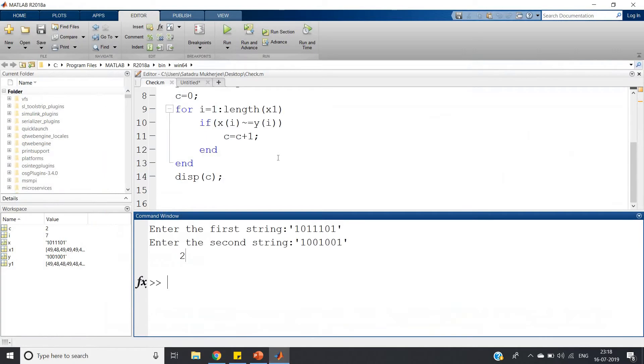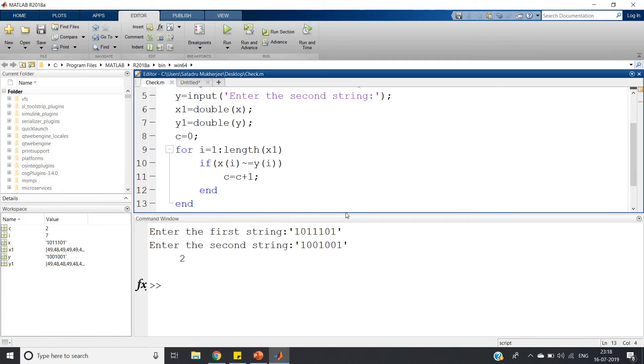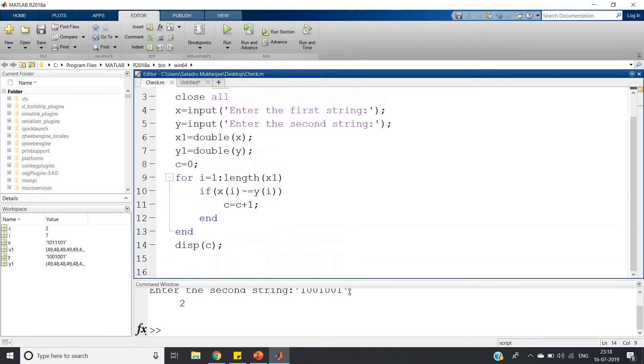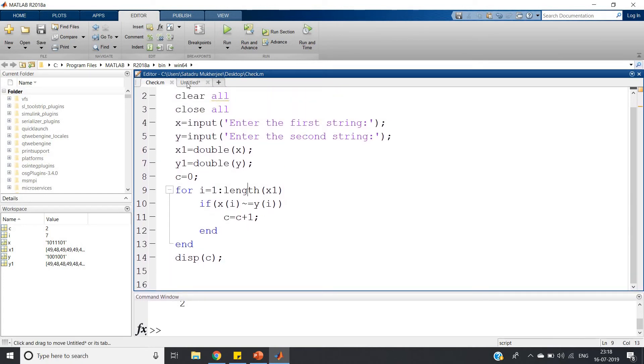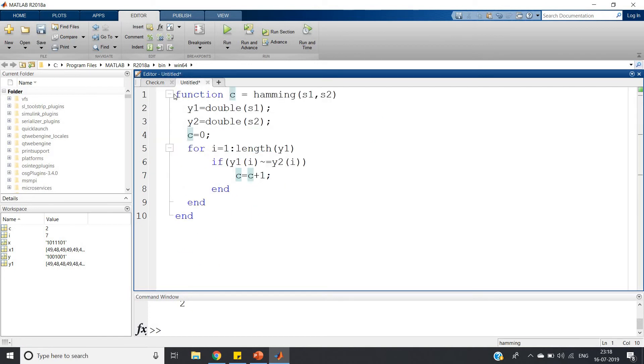Our code is perfectly working. Now if you want, you can implement the same program as a function, because you may repeatedly use this Hamming distance calculation in your program. In communication engineering you can implement one function: function c equals hamming of s1 comma s2, where s1 and s2 are strings of same length. y1 equals double of s1, y2 equals double of s2, c equals 0, and same algorithm - for i equals 1 colon length of y1, if y1 of i not equal to y2 of i, c equals c plus 1, end the if, and before end, don't forget to give end to the function. The function should return c as output.